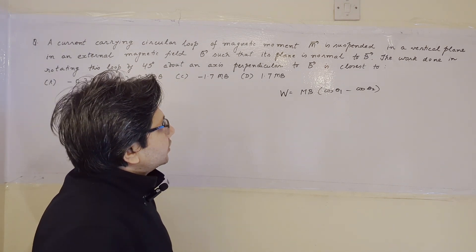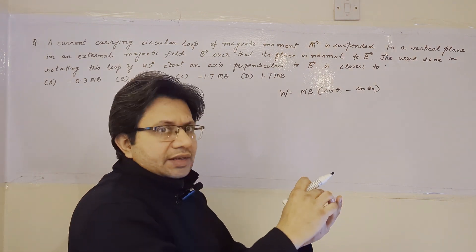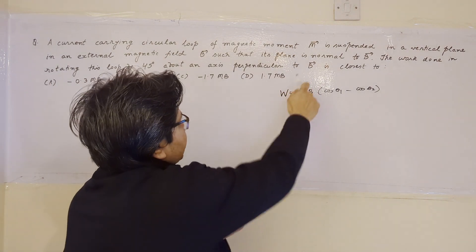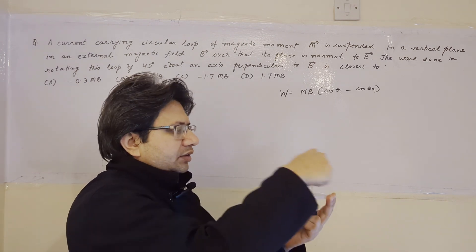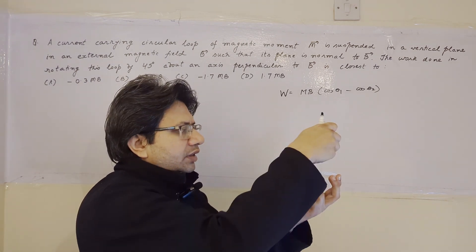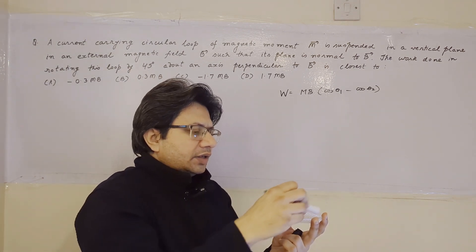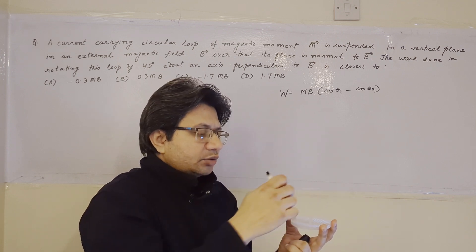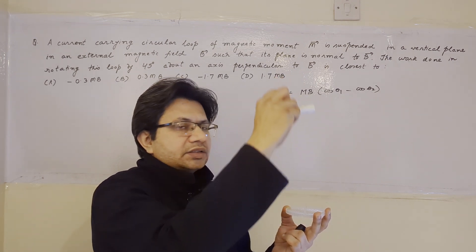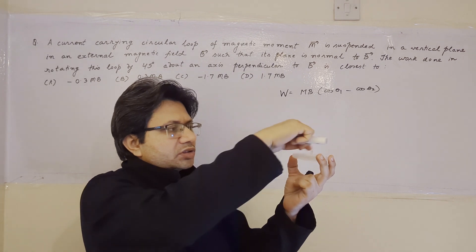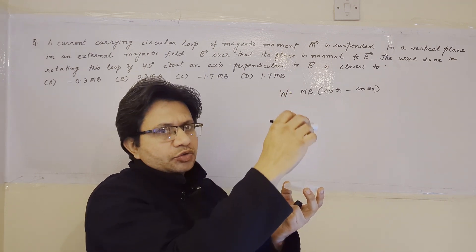The situation is like this: the coil is placed such that its plane is normal to B. The area vector corresponding to the coil is perpendicular to the surface of the coil. Since the plane is perpendicular to B, the area vector is in the direction of B.